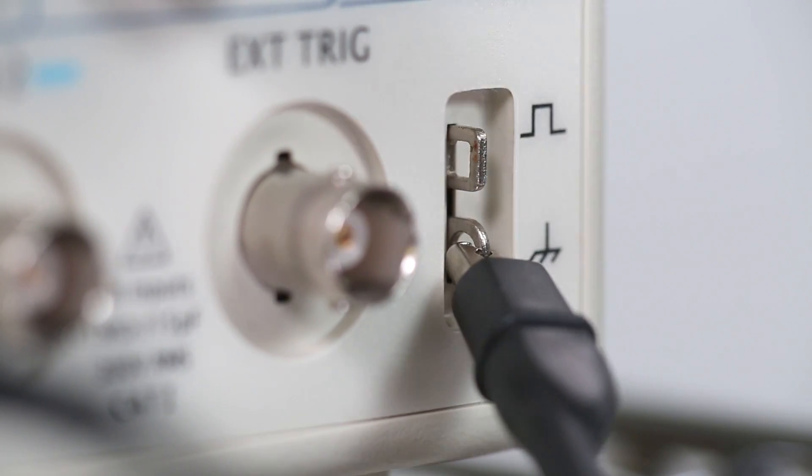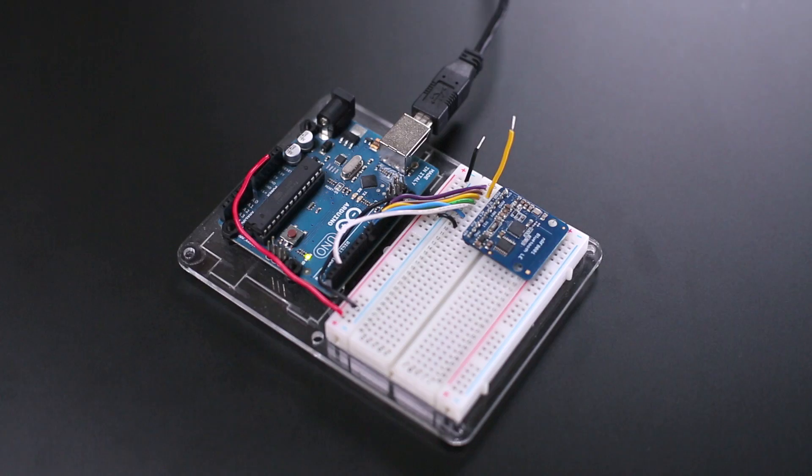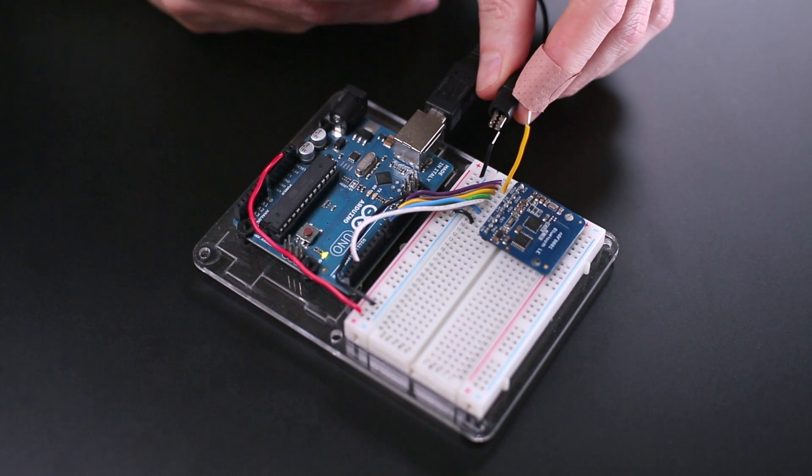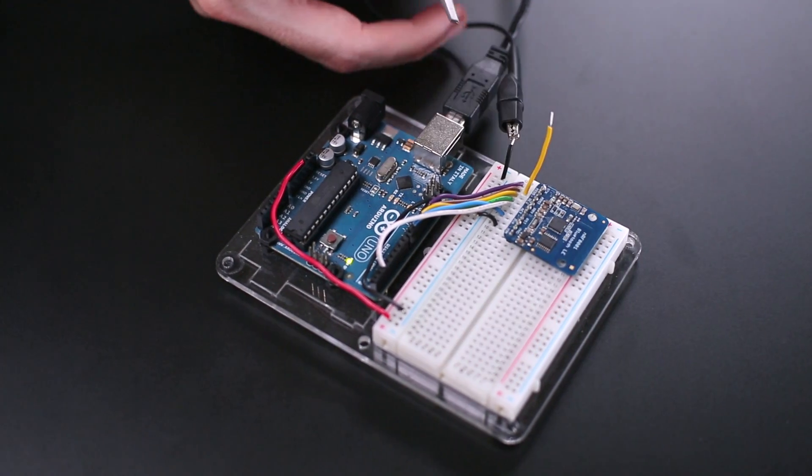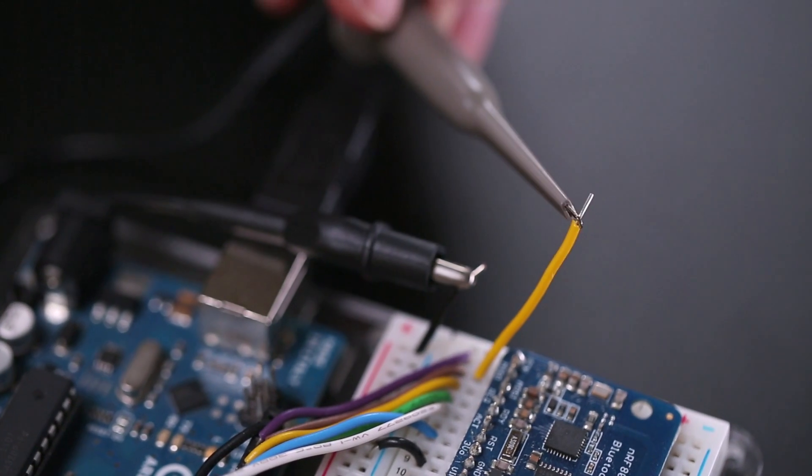So, let's say, for example, I would like to listen in on serial communication between a Bluefruit board and my Arduino. I just connect the scope's probe by clipping to ground and connecting the tip to my test point.